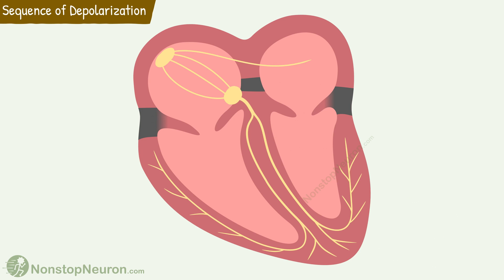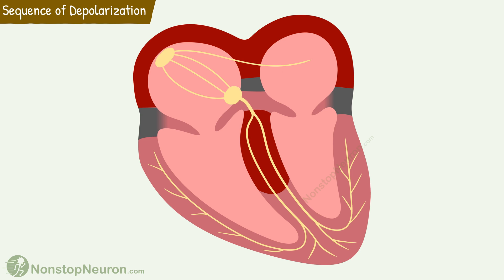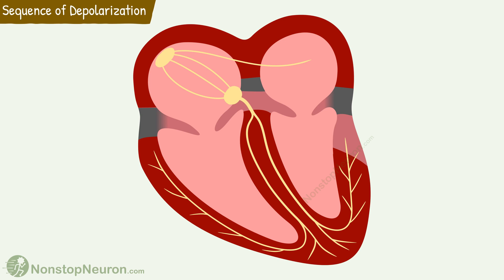Now let's see the sequence of depolarization in cardiac tissue. First, both the atria are depolarized. Then the septum is depolarized from left to right. Then the anteroseptal region of the myocardium towards the apex is depolarized. Then there is depolarization of the bulk of the ventricular myocardium from endocardium to the epicardium. Finally, the posterior portion of the base of the left ventricle is depolarized.